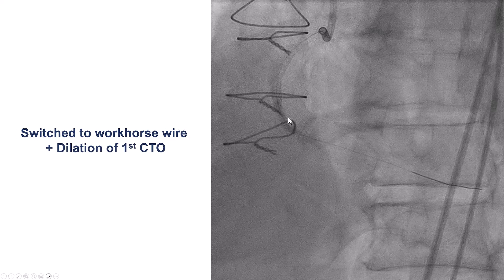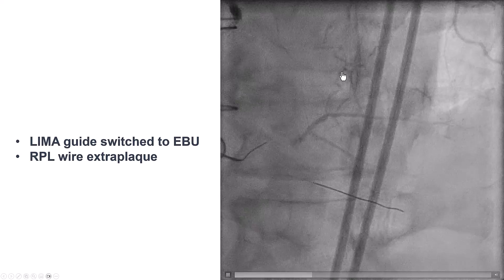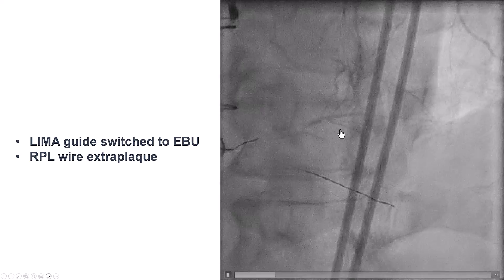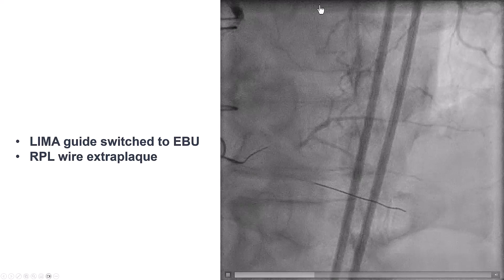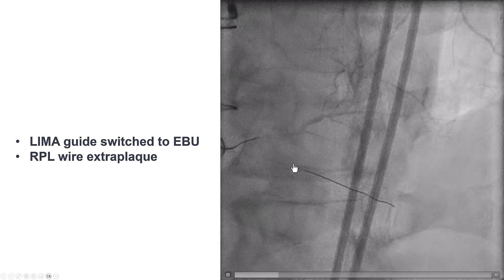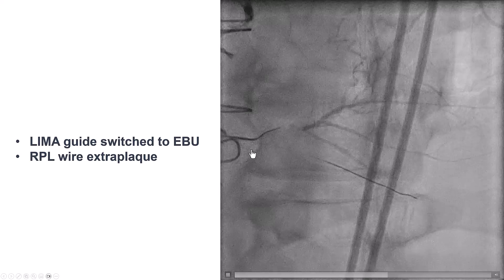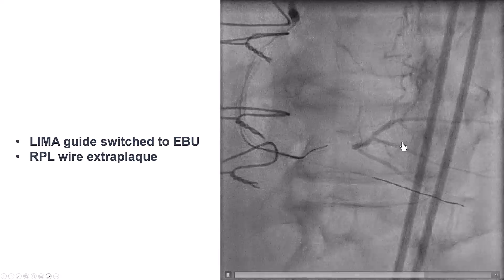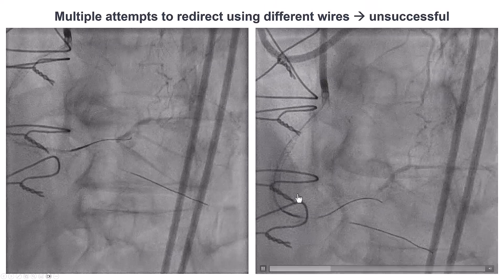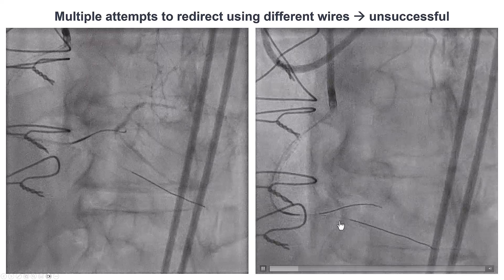We performed predilatation after switching the Mongo for a workhorse guidewire. We then removed the IMA guide to visualize the posterolateral and instead engaged a guide into the left main, injecting from the right coronary artery to confirm the second CTO. Unfortunately, antegrade wiring attempts of that second CTO were unsuccessful — the wire was in the extraplaque space, and despite trying different guidewires, we were clearly outside the lumen.